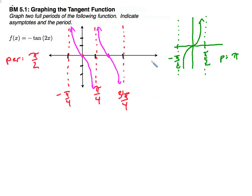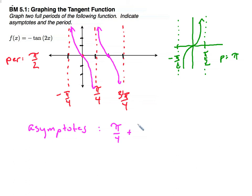I can keep this going — if I wanted to, the next asymptote would be at 5π/4. Or I can go this way, and that would be negative 3π/4. So my asymptotes are going to be located at π/4, and then I can add the period, which is π/2, to get the next asymptotes — where d is representing a specific value that will give me an asymptote, or however many periods I want. And that's an equation for the asymptotes. There you have it — there's our graph, there's our asymptotes. Thanks for tuning in, and we'll see you next time.